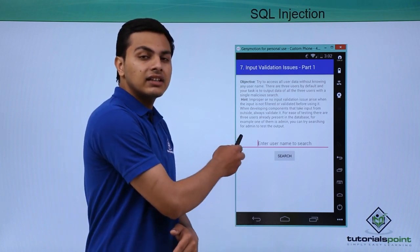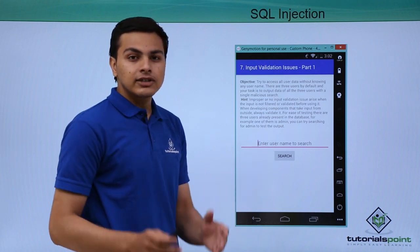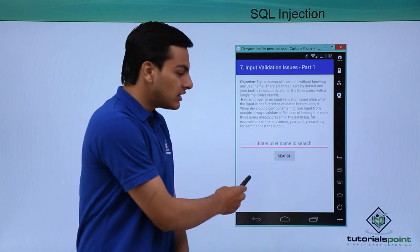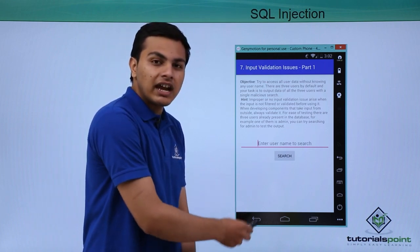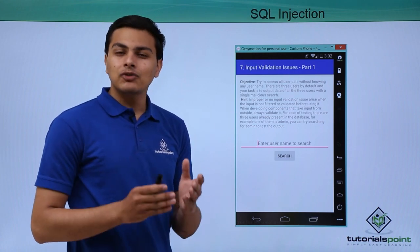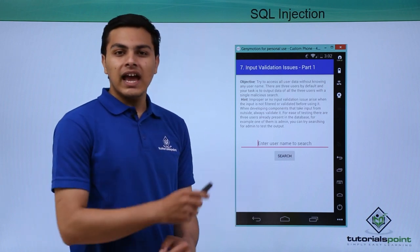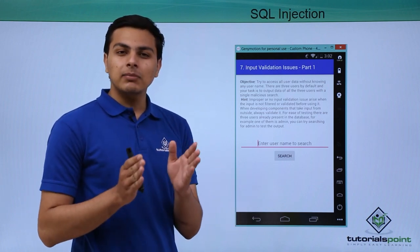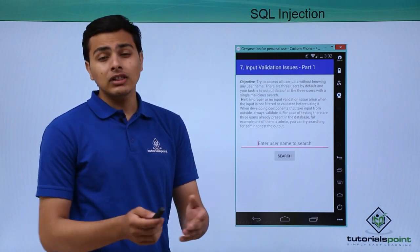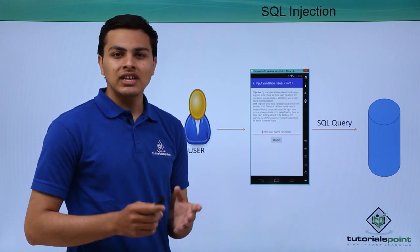The SQL injection issue in DIVA is named 'Input Validation Issues Part 1'. The challenge asks us to enter a username — if we write 'admin' and click search, it displays that user's information. We have to add something malicious in the input box and click search so that we can fetch out the information of all different users present inside the database.